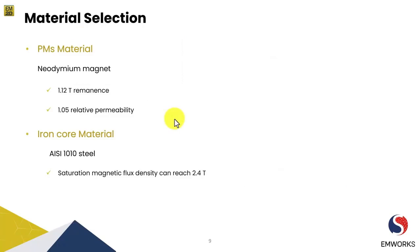We have carefully selected materials based on their magnetic properties, mechanical strength, and other factors. The permanent magnets used are made of neodymium, with a remanence of 1.12 tesla and a relative permeability of 1.05. These magnets are known for their strong magnetic properties and are commonly used in high-performance motors. The iron core material used is AISI-1010 steel, which has excellent magnetic properties and can withstand high magnetic fields without saturation, with a saturation magnetic flux density that can reach up to 2.4 tesla, and offers excellent mechanical strength.